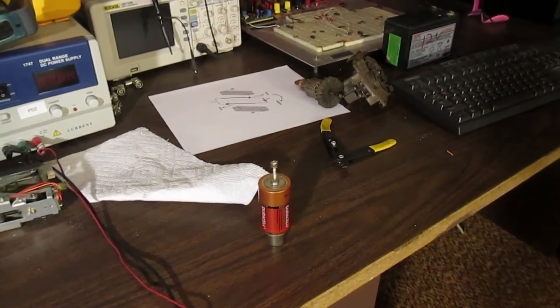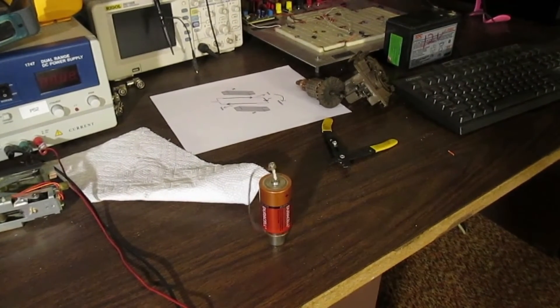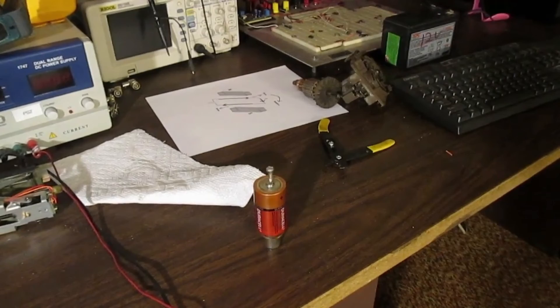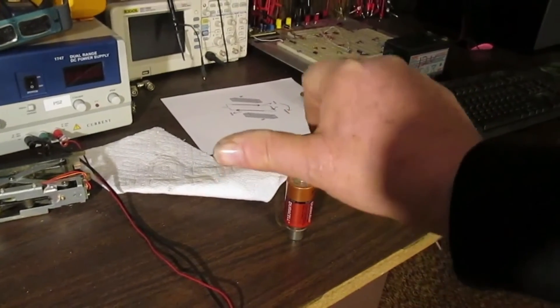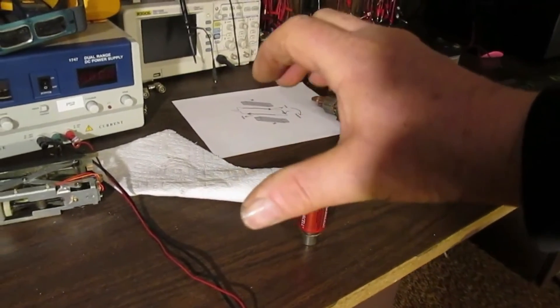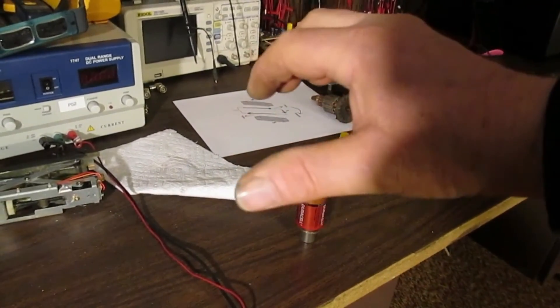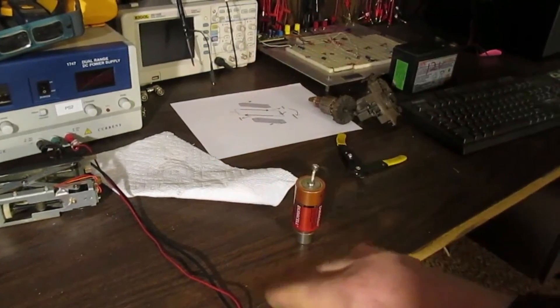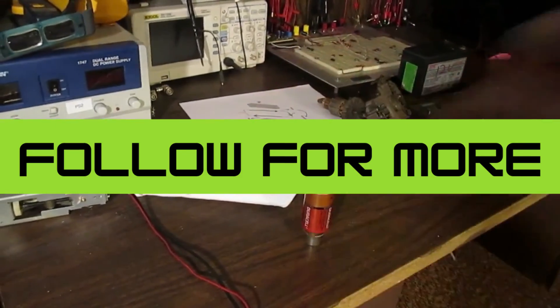This follows something called the right hand rule. When current flows in the direction of your thumb, a magnetic field is introduced in the direction of my fingers, and a force is applied in the direction of my palm.